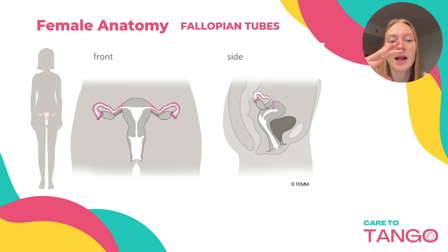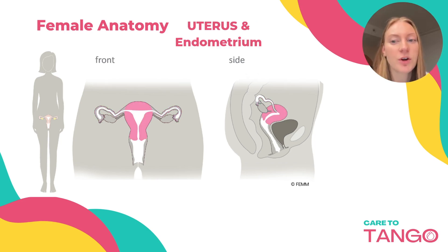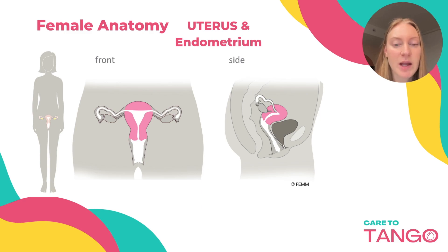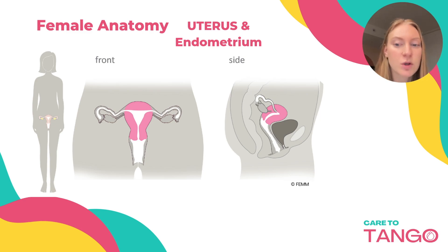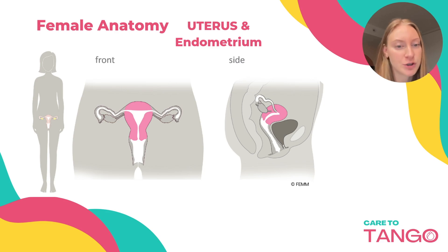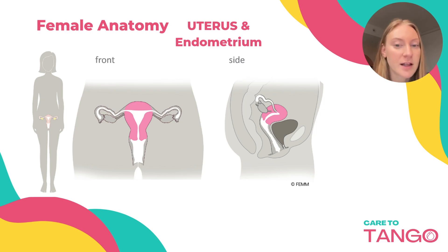Once your ovary has released that egg, the fallopian tube sweeps it up. The uterus is a small hollow muscular organ where the fertilized egg implants, and as a pregnancy continues it expands many many times its size. The endometrium is the lining of the uterus which you shed during your period. It's a mucous membrane that develops during your cycle in response to the hormones estrogen and progesterone, making a nice cushiony area just in case a fertilized egg comes and wants to implant there. If you did not get pregnant that cycle, your hormones will drop and you will shed that lining as your period.